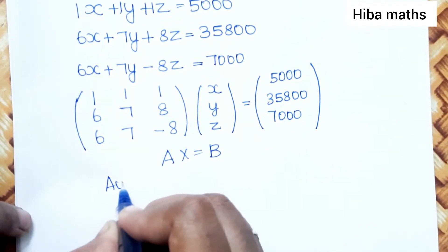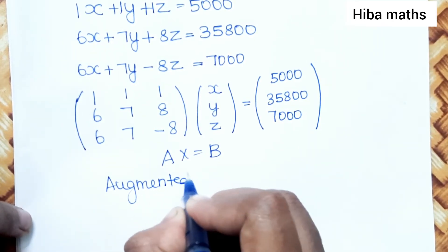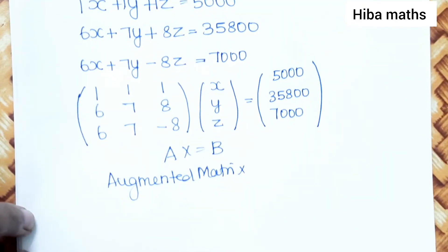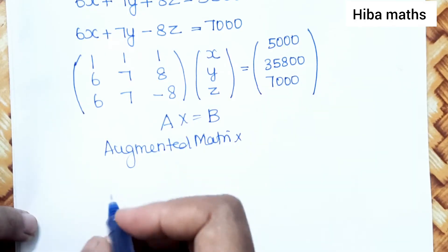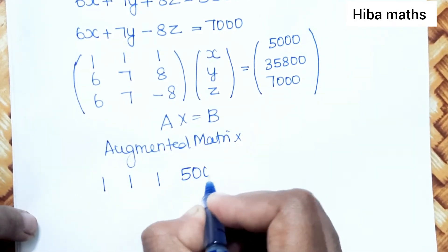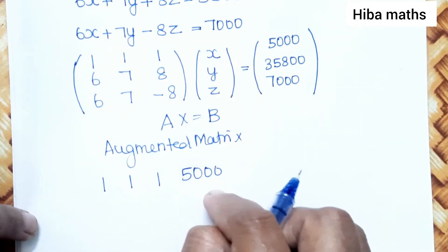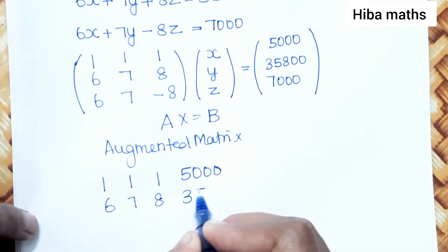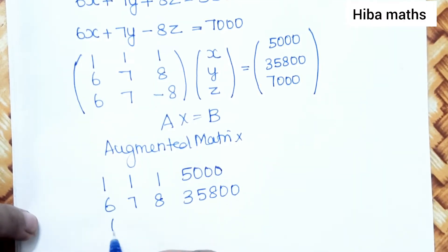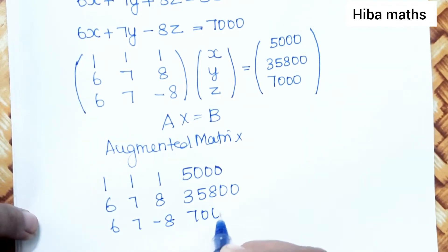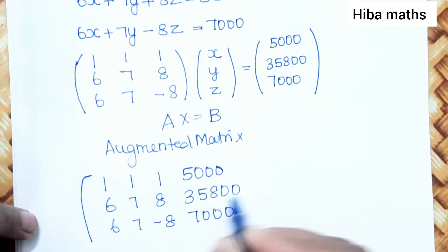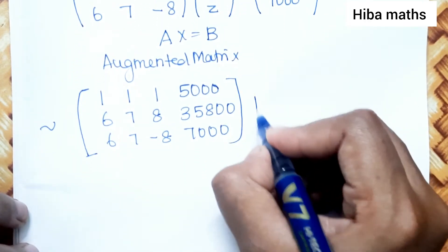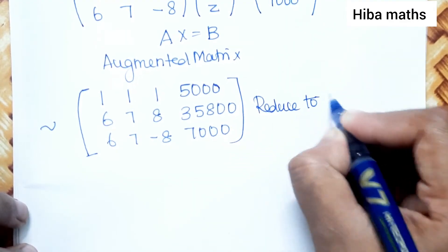We form the augmented matrix [A|B] by appending matrix B as the fourth column. The augmented matrix is: [1, 1, 1 | 5000], [6, 7, 8 | 35800], [6, 7, -8 | 7000]. We will now reduce this to row echelon form.